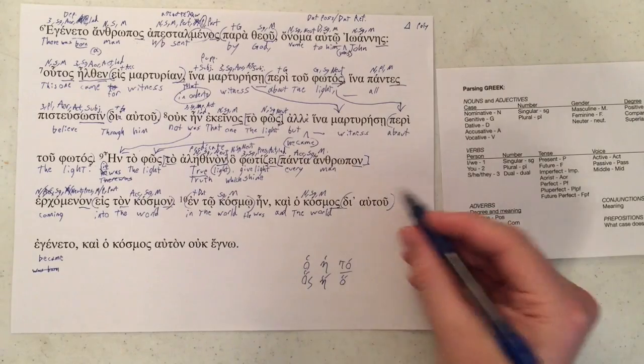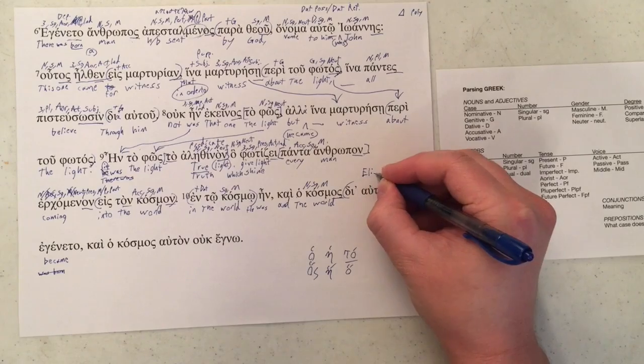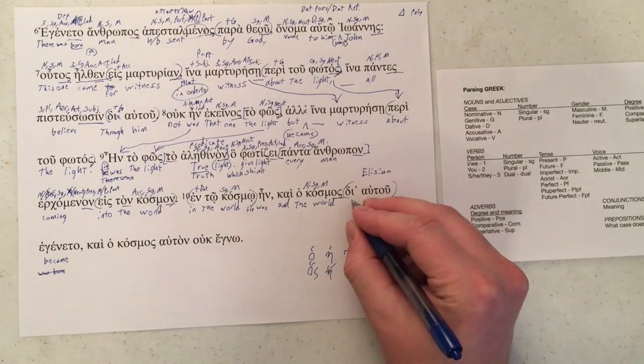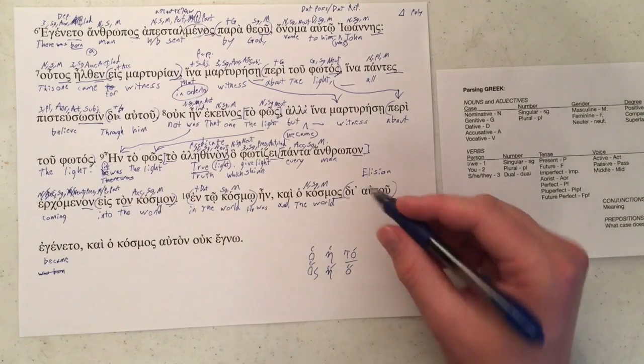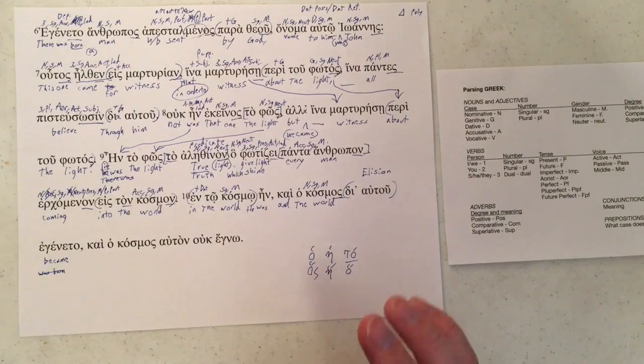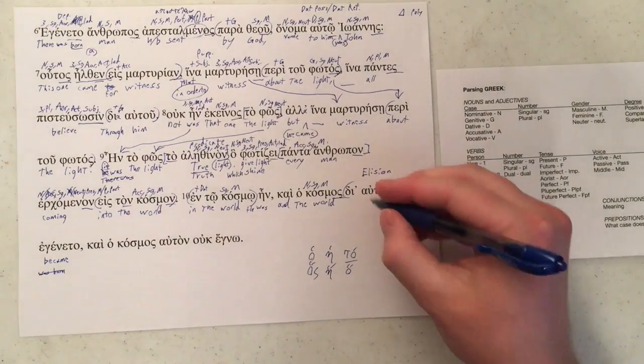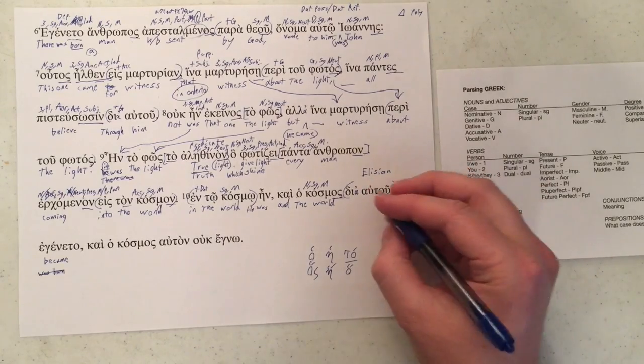We've got elision happening here. Let me spell that for you. Where a vowel drops out because the next word starts with a vowel, and this is usually going to be alpha, epsilon, or the diphthong omicron iota. Here we have dia as the most likely candidate.